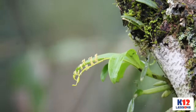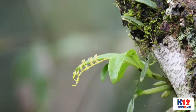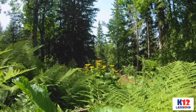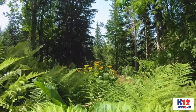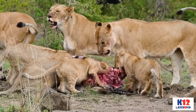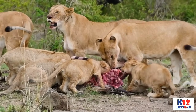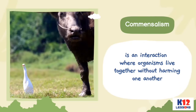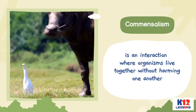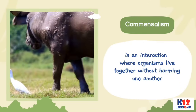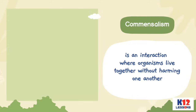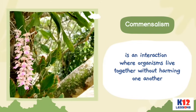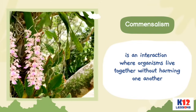There are different organisms living in this ecosystem which interact with each other. Commensalism is an interaction where organisms live together without harming one another. For example, orchids are attached to the trunk of a tree without harming it.